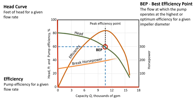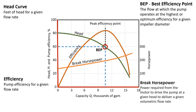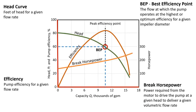If we put the brake horsepower curve on here, we can see the power requirements. Brake horsepower is the power required from the motor to drive the pump at a given head to deliver a given volumetric flow rate. Drawing a line from where the flow rate intersects the brake horsepower curve, we see that this requires about 200 horsepower.